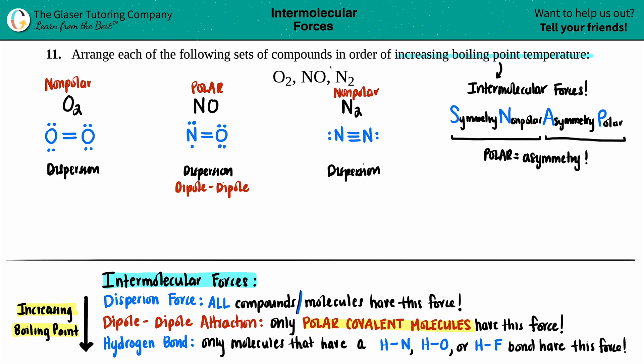And then the last bond is the hydrogen bond. Which is technically a force. It's not an actual bond. But these have to have hydrogens. And those hydrogens have to be bound by either a nitrogen, an oxygen, or a fluorine. But in this case, I see no hydrogens. So there's no possible way to have a hydrogen bond.